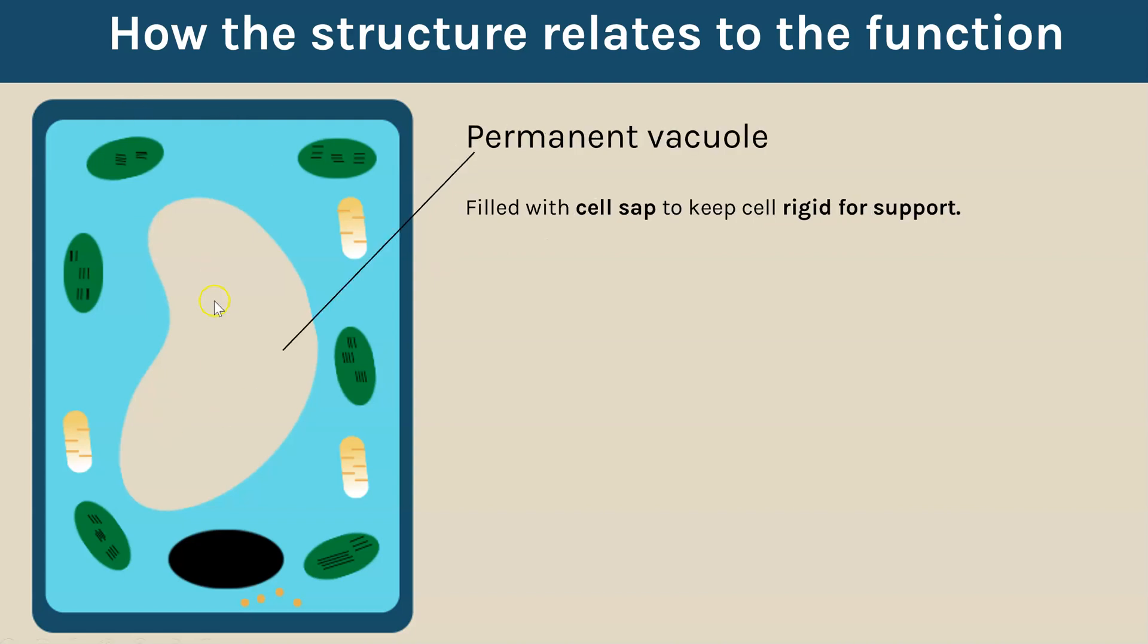The permanent vacuole, so this is filled with cell sap. That is a liquid and that liquid again helps to support the cell and make it really rigid. So you have that liquid in the centre pushing outwards to make the cell really rigid.